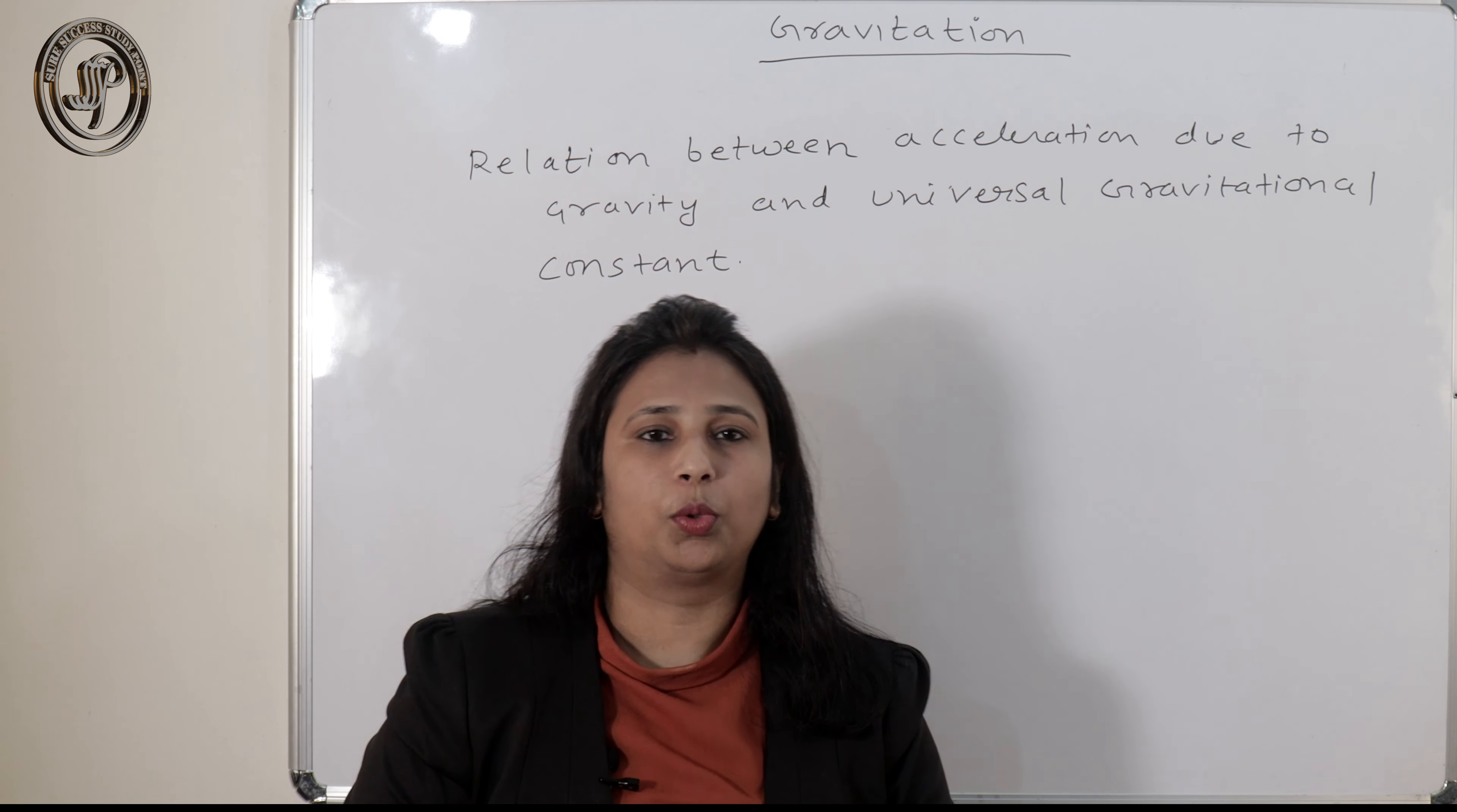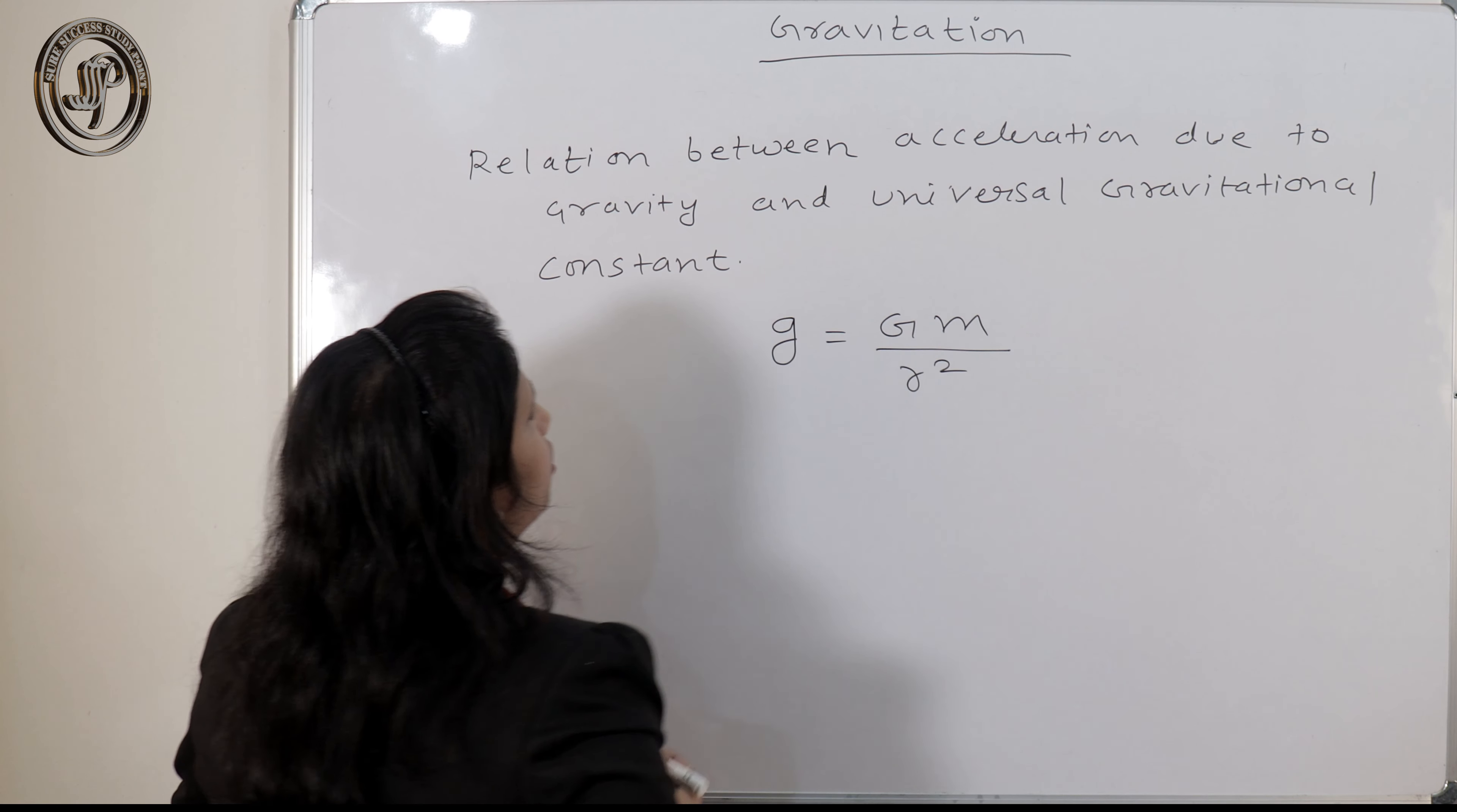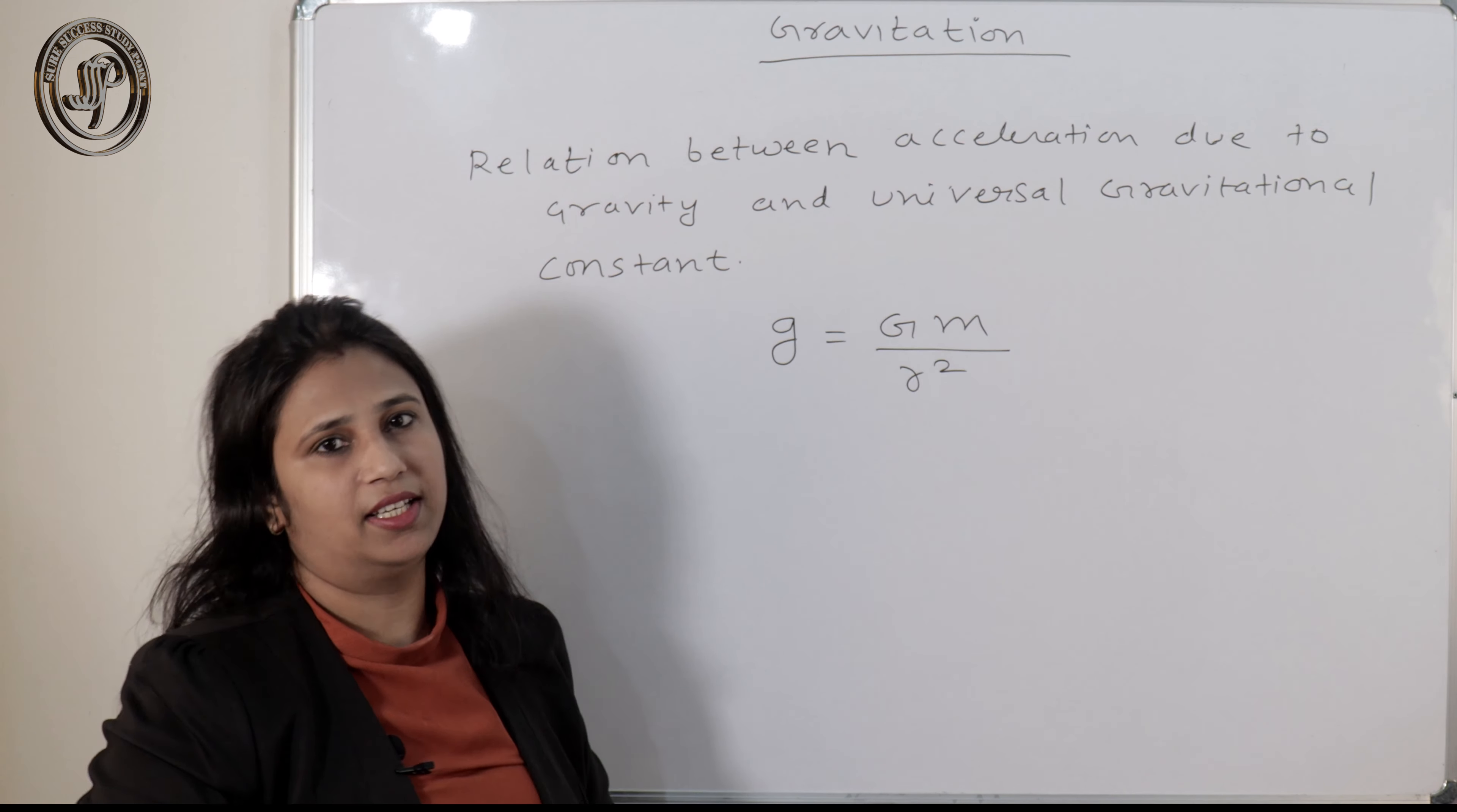Now in this video lecture we will learn the relationship between acceleration due to gravity and universal gravitational constant and the problems related with the same topic. So what is the relation between the acceleration due to gravity, which we denote as g, and how it is related with universal gravitational constant. This is the relation. So g is gravity, acceleration due to gravity. M and r, where m is the mass of that planet whose acceleration due to gravity is this, and r is the radius of planet.